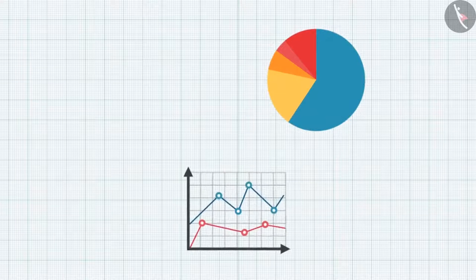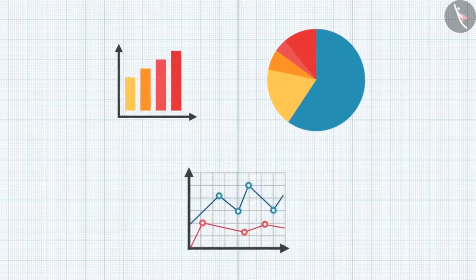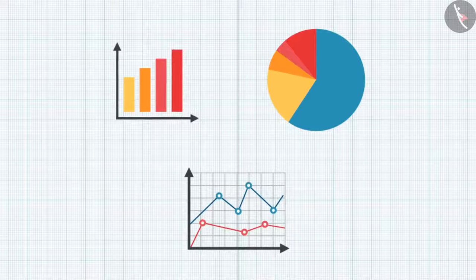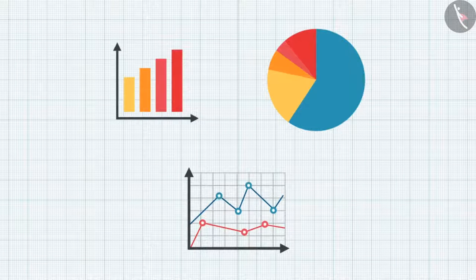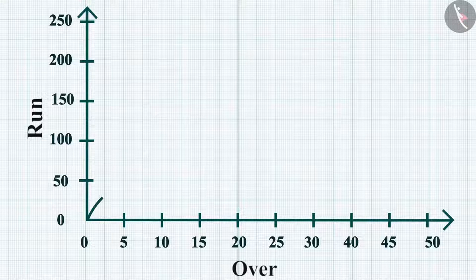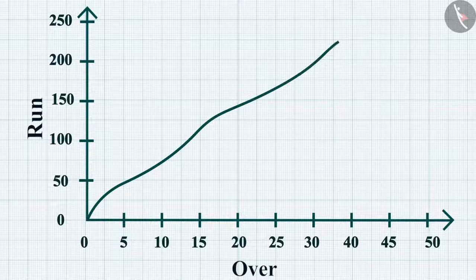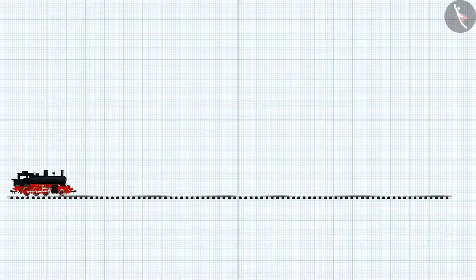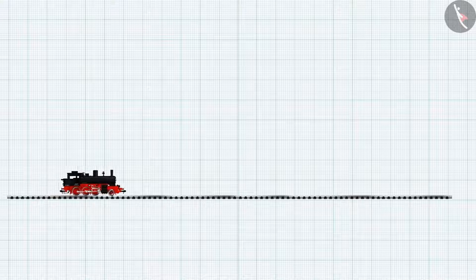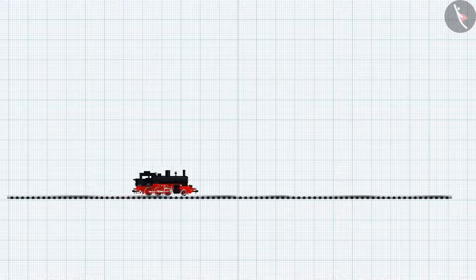Graphs offer an easy method to showcase the relation between two physical quantities. For example, during a cricket match, we can represent the performance of a team in a runs versus overs graph. Similarly, we can represent the motion of an object in a line graph.